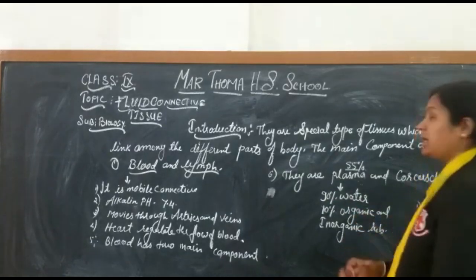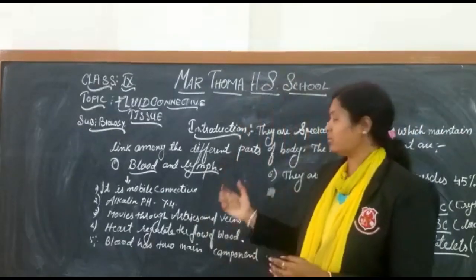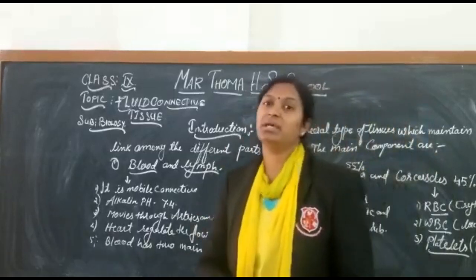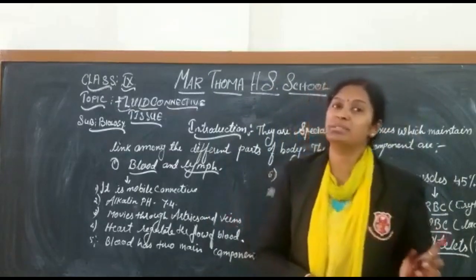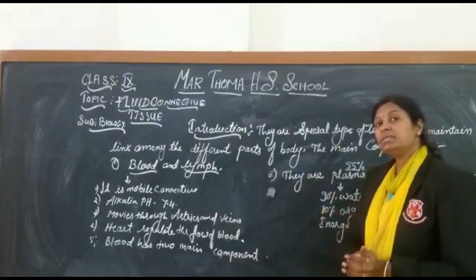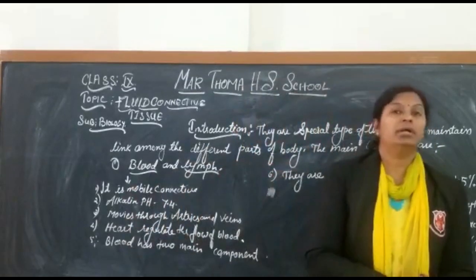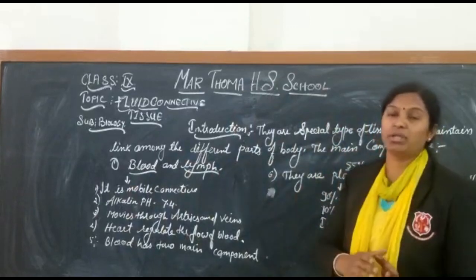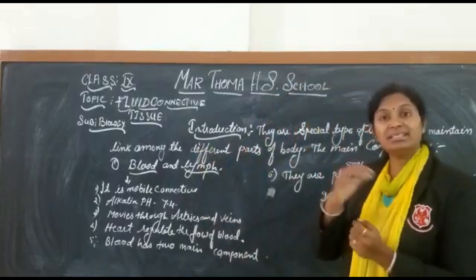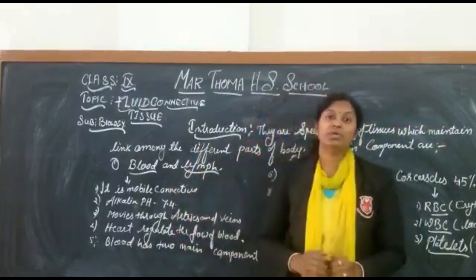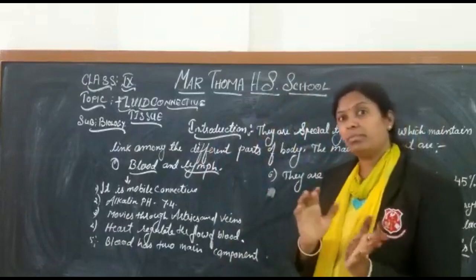The RBC make up the most abundant part of the blood. The shape of RBC is biconcave and there is no nucleus in RBC — this is an important difference between WBC and RBC. RBC are red in color because of the protein hemoglobin present in them. Heme is responsible for the red color of the blood, while globulin is the protein component.